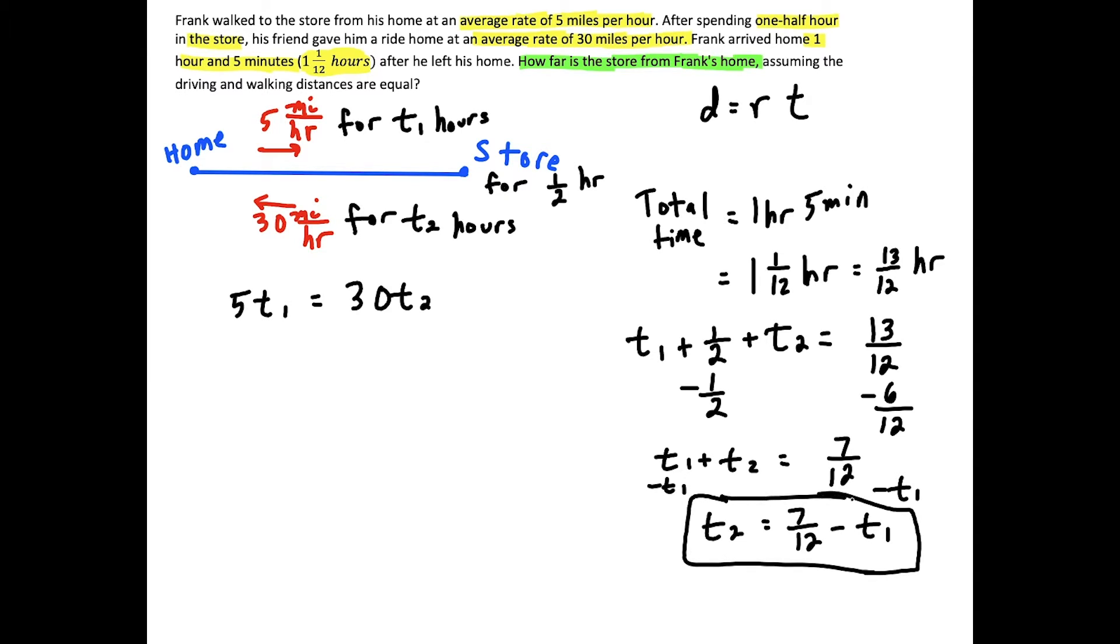And we're going to use this here to set up an equation with just one variable, and then we'll be able to solve. T2 plus T1. So we have 5 times T1 equals 30 times, and make sure we use parentheses here, T2 is equal to seven twelfths minus T1. So then the rest, we just do the algebra. We're going to distribute. So we have 30 times 7 over 12 minus 30 T1. And what we could do is add 30 T1 to both sides. And if we look here, 30 over 12, we could divide the top and bottom by 6. 30 divided by 6 is 5, and 12 divided by 6 is 2. So these products here work out to 5 times 7, which is 35 over 2. And on the left side, we have 5 T1 plus 30 T1, which is 35 T1.